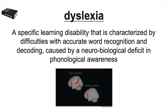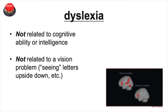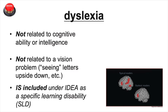Now let's take a look at the definition for dyslexia. This definition is adapted from both IDEA and the International Dyslexia Association. Dyslexia is a specific learning disability that is characterized by difficulties with accurate word recognition and decoding, and it's caused by a neurobiological deficit in phonological awareness. Like dysgraphia, dyslexia is not caused by a vision problem and is not connected to a person's cognitive ability or intelligence. But dyslexia is included as a specific learning disability under IDEA.